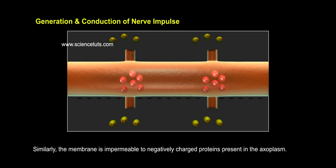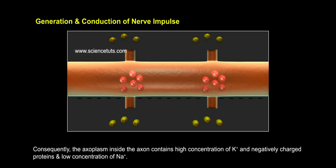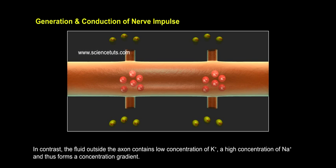Similarly, the membrane is impermeable to negatively charged proteins present in the axoplasm. Consequently, the axoplasm inside the axon contains a high concentration of K+ and negatively charged proteins, and a low concentration of Na+. In contrast, the fluid outside the axon contains a low concentration of K+ and a high concentration of Na+.